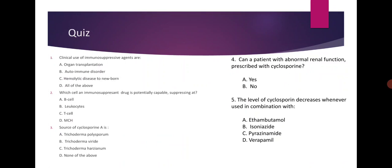Now, some practice questions. Question 1: Clinical uses of immunosuppressive agents are: A) organ transplantation, B) autoimmune disorder, C) hemolytic disease of the newborn, or D) all of the above. Since all of the above is correct, D is the correct answer.